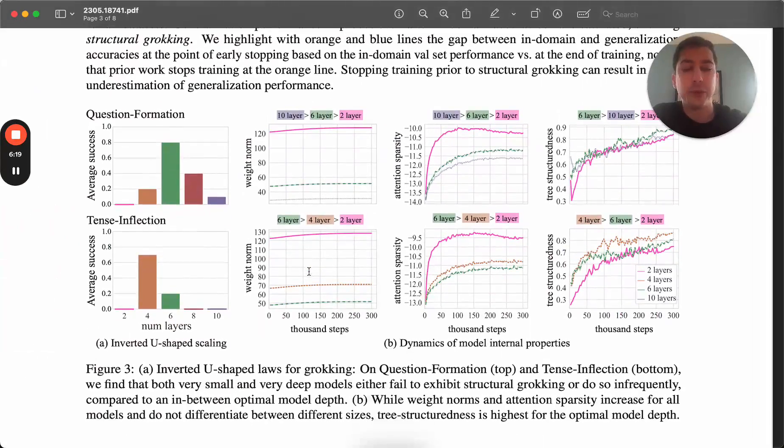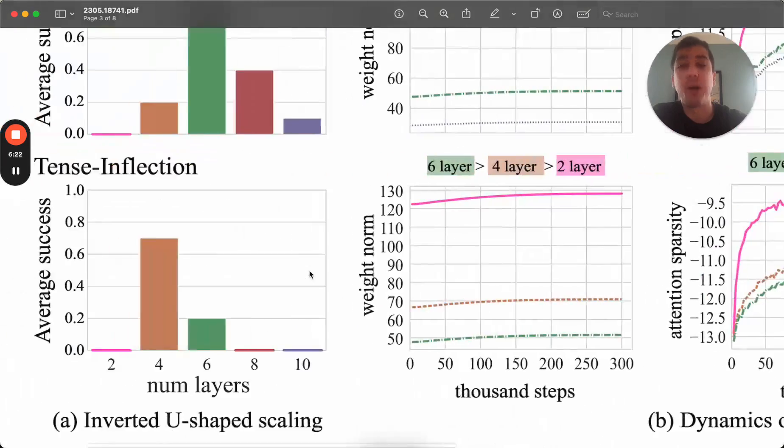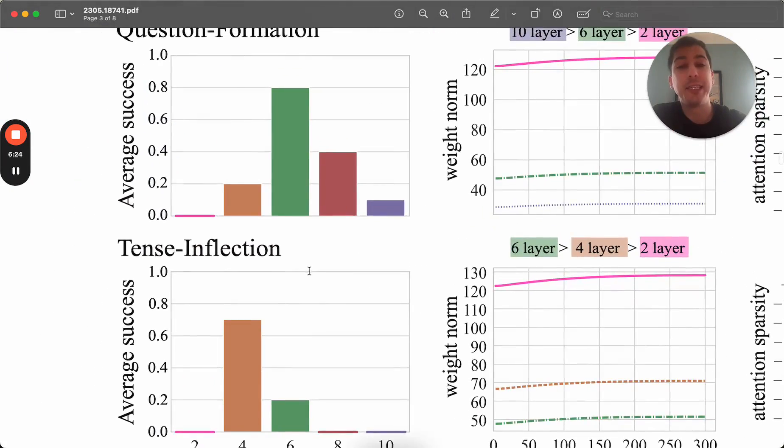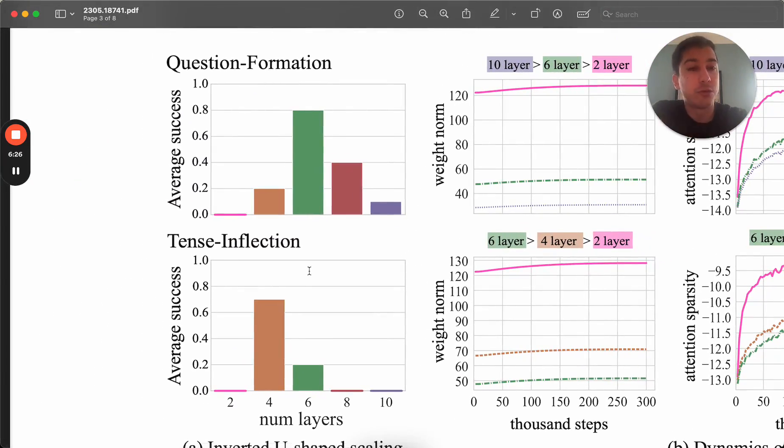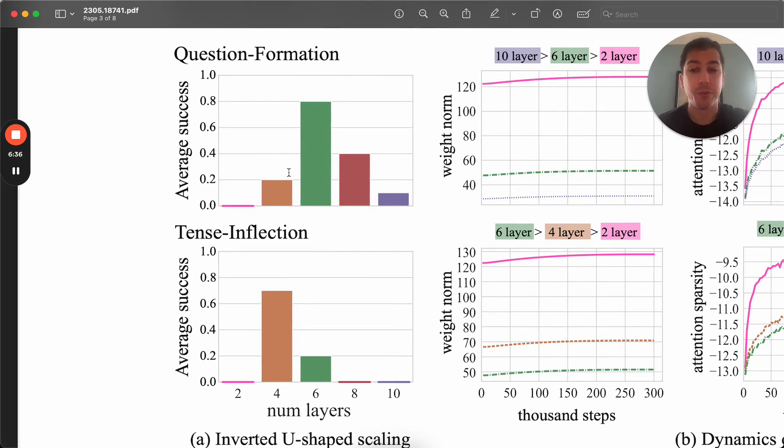So they continue then to explore this. Why is this happening? And in what cases does this happen? And they find that this learning, this grokking happens in what they call a U-shaped learning style, a learning curve. So if you make your model too small, for example, with two layers, and that's what the x-axis is, the model is not going to be able to grok anything. It might be able to fit your trained data set pretty well, and even learn pretty well the validation data set, but it's not going to be able to generalize.